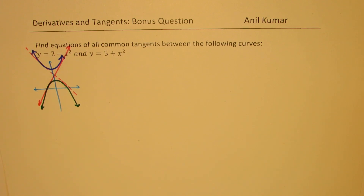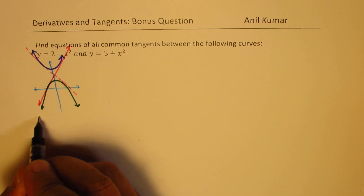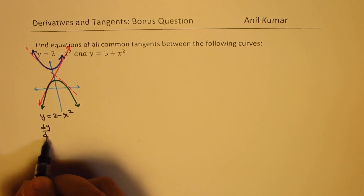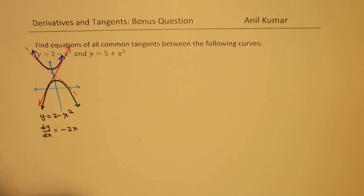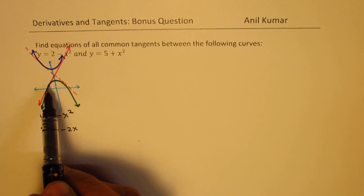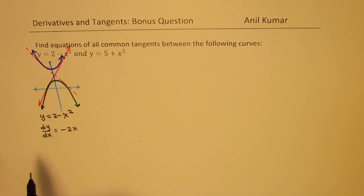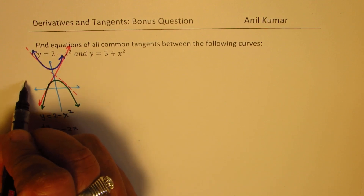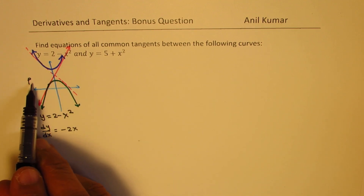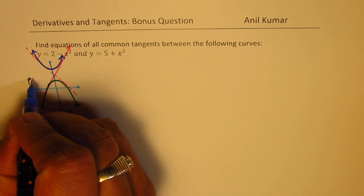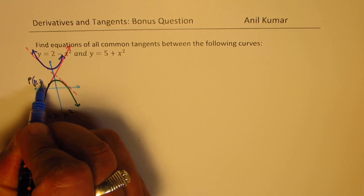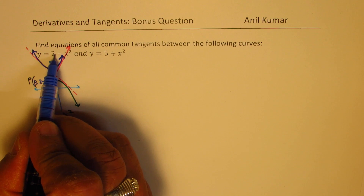Now let us work on the equations given to us. We have y equals 2 minus x squared, so dy/dx equals minus 2x. On this curve, at any point, the slope is going to be minus 2x. Let us consider a point capital P, and if lowercase p is my x value, then the y value will be 2 minus p squared.